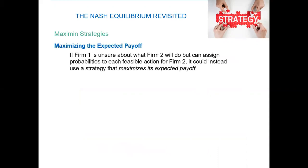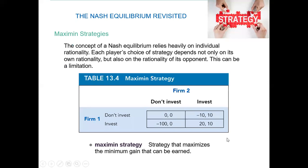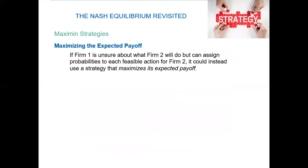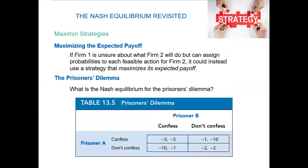The maximin strategy means maximizing the expected payoff. If Firm 1 is unsure about what Firm 2 will do, it can assign probabilities. In this course I focus on four probabilities from two choices per firm. In advanced courses with three decisions per firm, we would have nine probability combinations. Instead, the strategy maximizes the expected payoff — as in the prisoner's dilemma confess scenario, identifying what the maximum strategy would be.